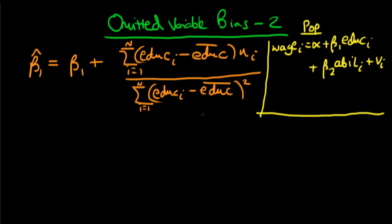We were trying to estimate the causal effect of one year of education on an individual's level of wages in the population, and we derived this particular estimator for that effect. This is just the least squares estimator of beta_1_p in the population.